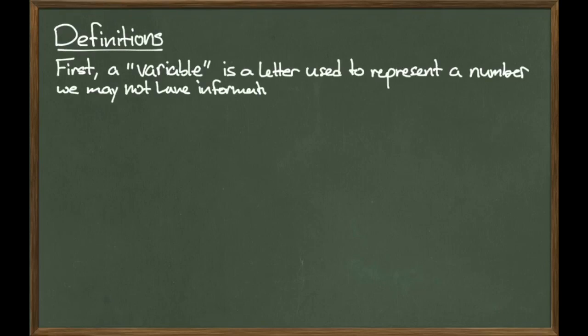The first one is a variable. A variable is a letter that's used to represent a number that we may not have information on. X is kind of a fan favorite, but you can also see letters like T, S, Y, etc.